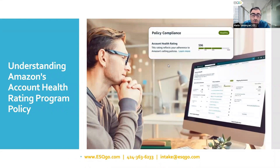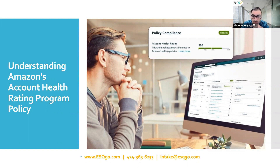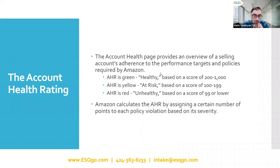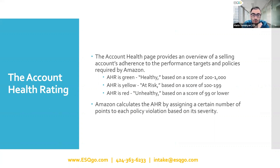If you go to your performance health dashboard or account health dashboard, it'll look different. You should now see the account health rating, and most of it is green. We've got a chart here — the score ranges from zero to a thousand. From 200 to a thousand means it's healthy, that's a nice big cushion. If it's 100 to 199, it means you're at risk.